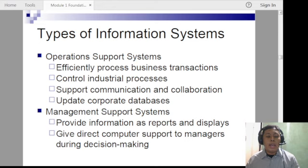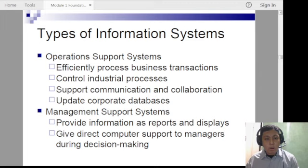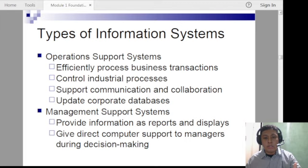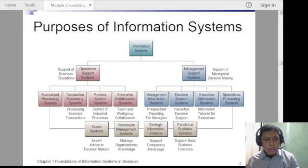We also have management support systems, which generate reports — examples include receipts, grade slips, summary of grades, and transcripts of records. For instance, whether you have graduated or not can be determined from your grade slip and summary of grades. If you still have a failing grade, you won't graduate. These are examples of management support systems, used with relatable examples to help you understand better.